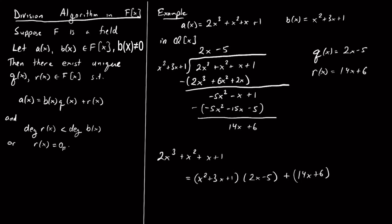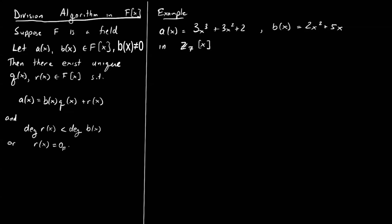Let's do a more interesting example in something that might not be a nice field like Q[x] — let's try something in Z₇. We'll take a(x) = 3x³ + 3x² + 2 and b(x) = 2x² + 5x, and compute their quotient and remainder in Z₇[x]. I'll write a(x) as 3x³ + 3x² + 0x + 2 for bookkeeping, and put b(x) = 2x² + 5x on the left.